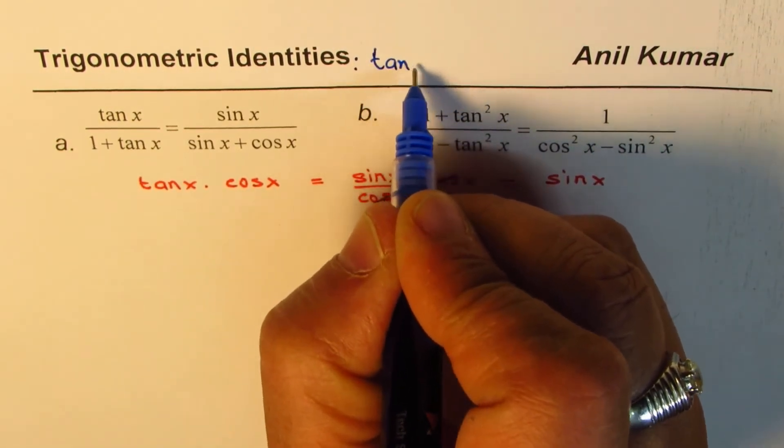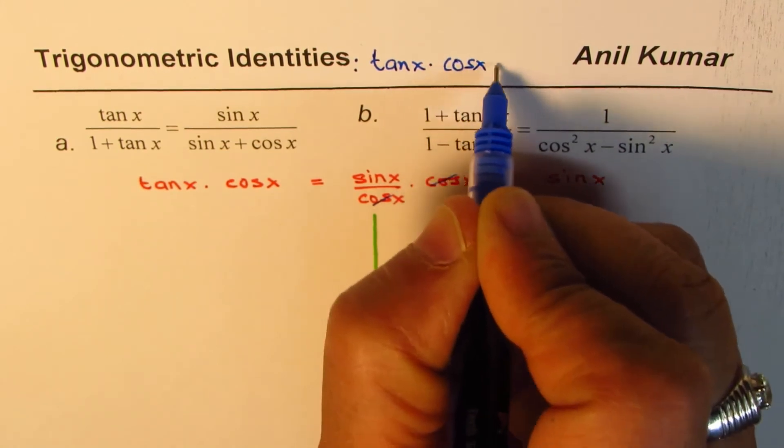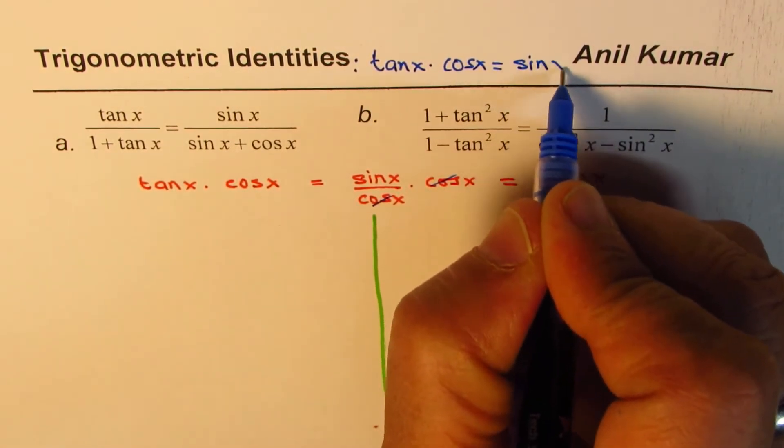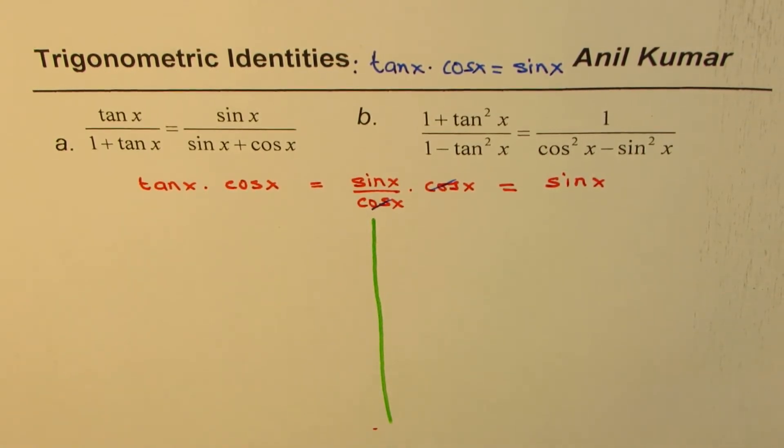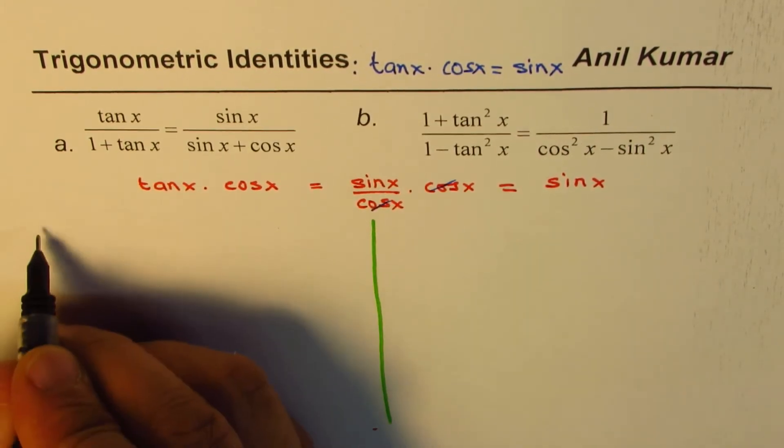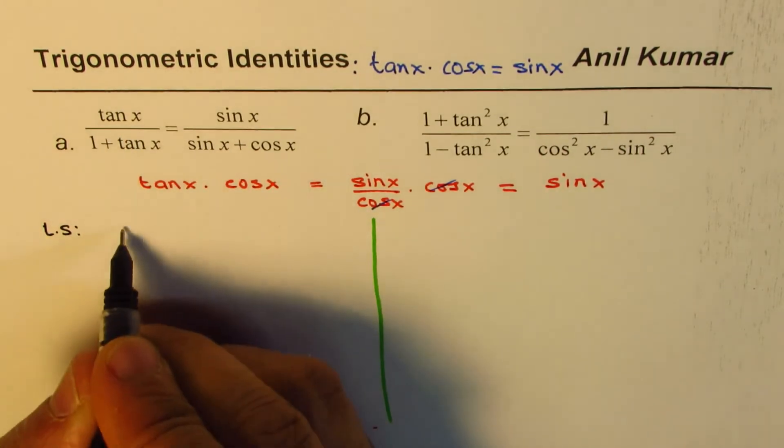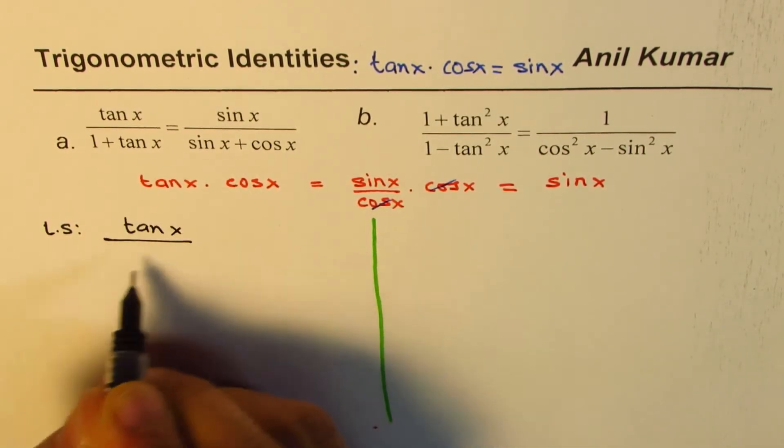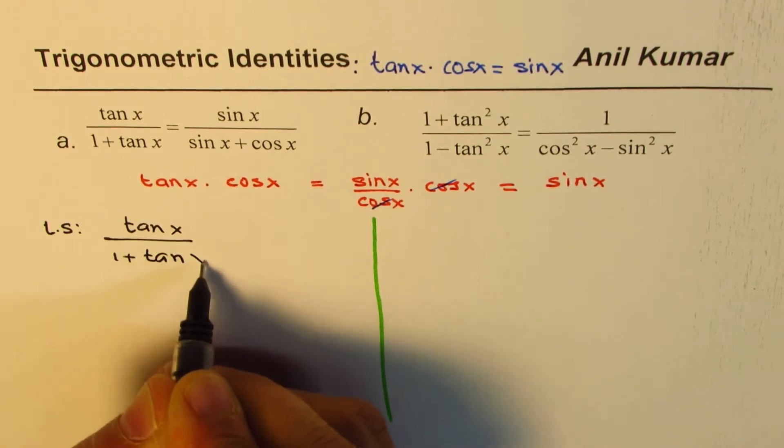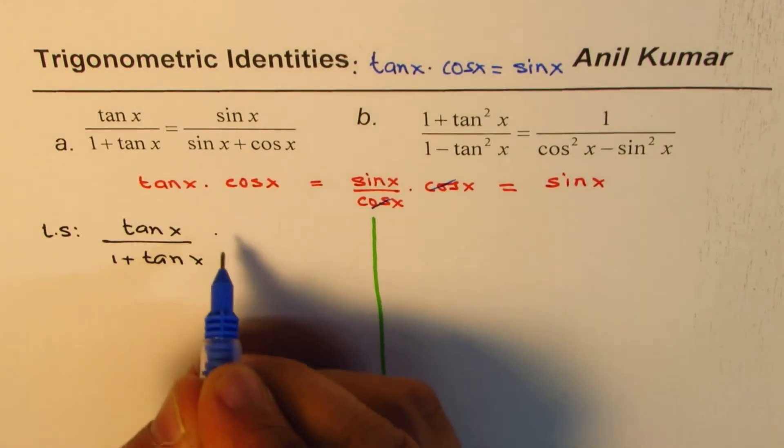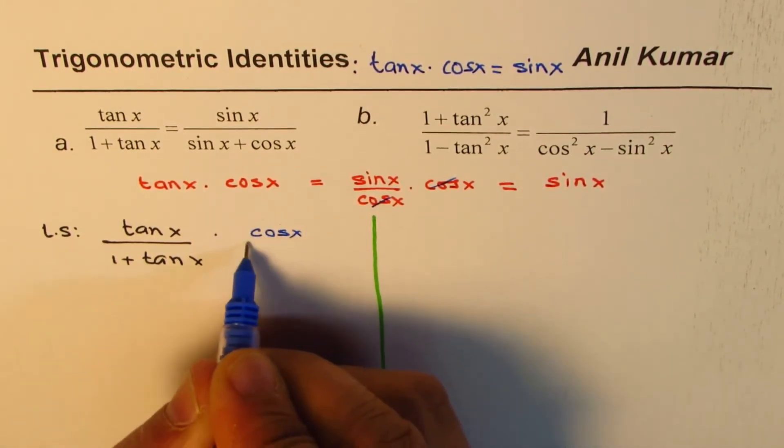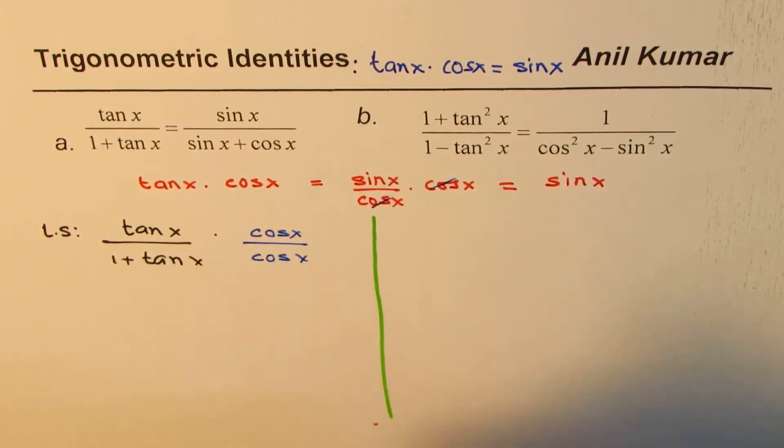So, remember this, tan x times cos x is equal to sin x. So, I am actually giving you real ways of understanding how to prove trigonometric identities. That should really help you to understand this topic and get excellent marks. So, as I said, let's begin from the left side, which is tan x over 1 plus tan x. To prove this to be equal to right side, what we need to do, multiply both by cos x, both numerator and denominator. That's the key.